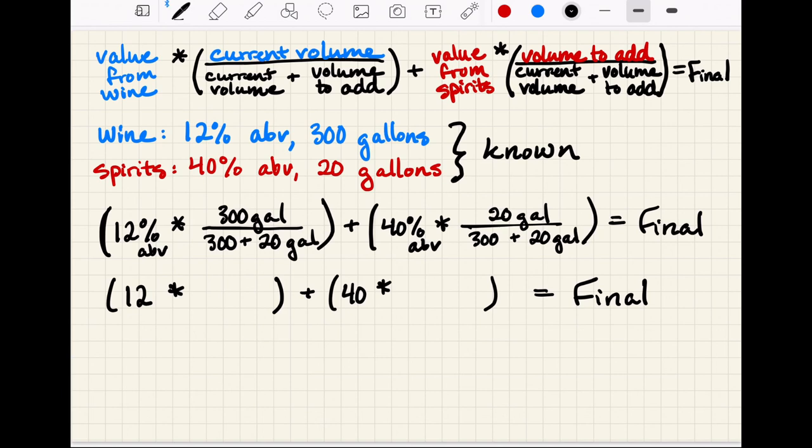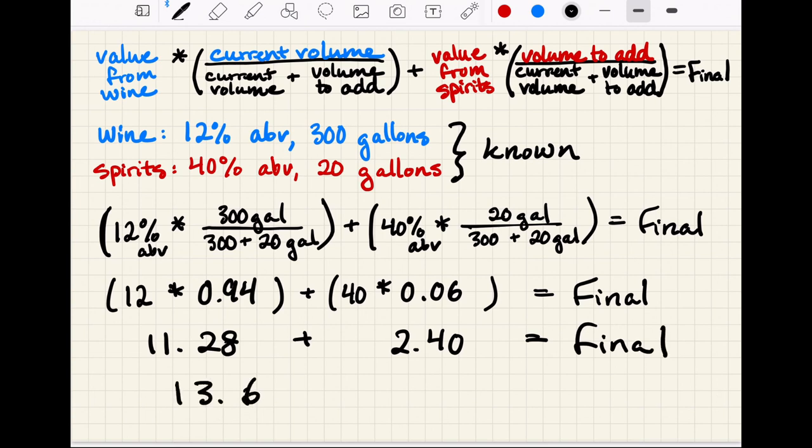And if we go through and do that math, we end up with 12 times 0.94 plus 40 times 0.06, which works out to 11.28 plus 2.40. And that results in a final ABV of 13.68%.